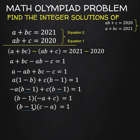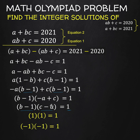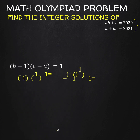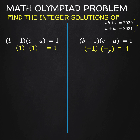We have a product of two numbers equal to 1, and both numbers are integers. So what two integers, when multiplied, result in 1? There are only two possible ways: the first factor is 1 and the second is 1, or the first factor is negative 1 and the second is negative 1. So B minus 1 could be positive 1 when C minus A is also positive 1, or B minus 1 equals negative 1 when C minus A is also negative 1. Let's examine both cases and solve for A, B, and C.